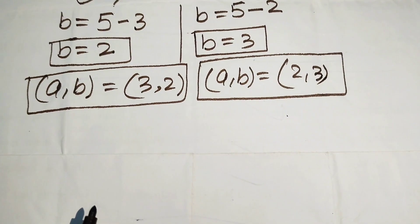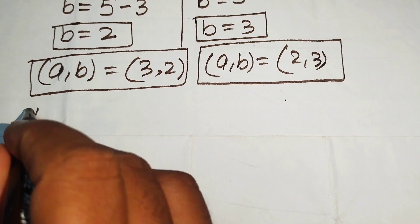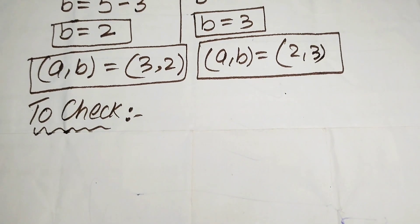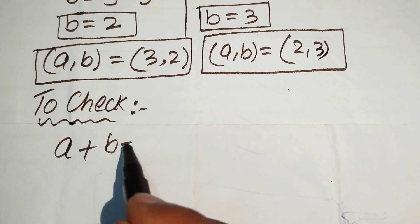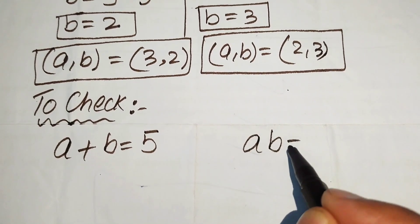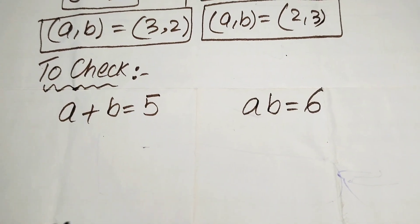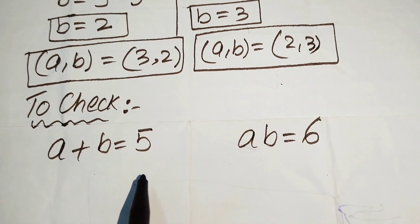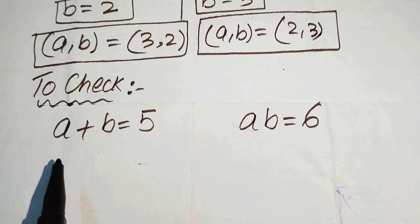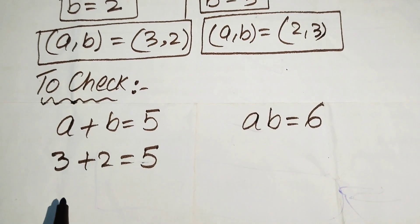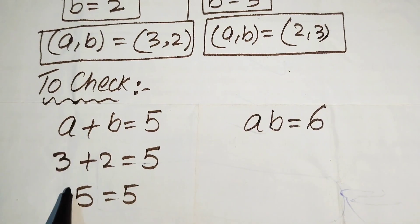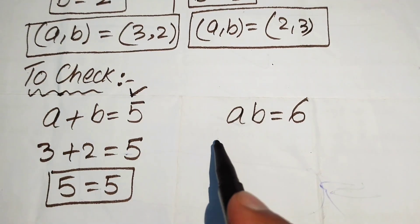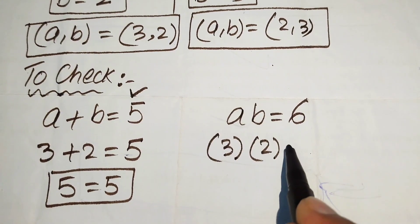Now we verify these solutions in the given equations: a plus b equals 5 and ab equals 6. Checking solution (a, b) = (3, 2): substituting gives 3 plus 2 equals 5, which is satisfied. Then 3 times 2 equals 6, which also equals 6, so this solution satisfies both equations.